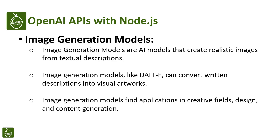Now let's look at another exciting type of AI model: image generation models. Image generation models are AI models that create realistic images from textual descriptions. Models like DALL-E can convert written descriptions into visual artworks, and they find applications in creative fields, design, and content generation.